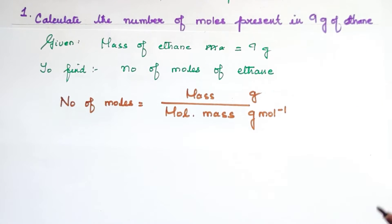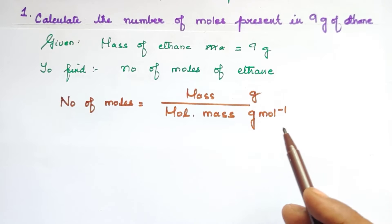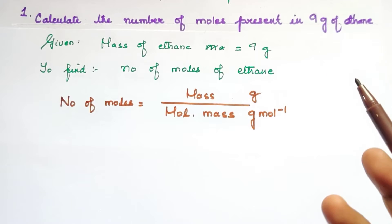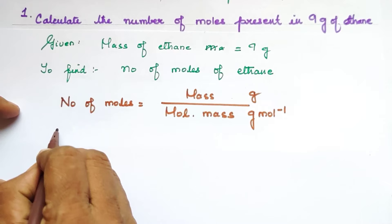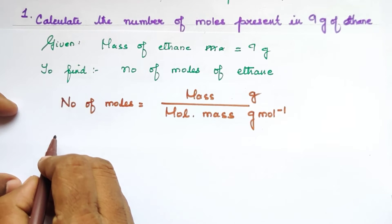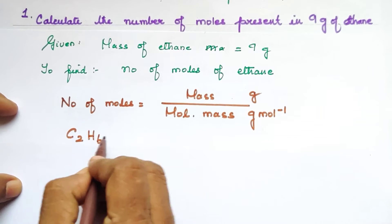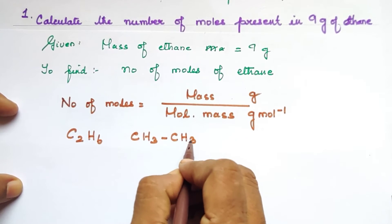The units are consistent, so we will substitute to find the answer. The mass is 9g. For the molar mass of ethane, it is not given in the question, so we have to calculate it. We need to know the molecular formula of the compound. The formula for ethane is C₂H₆ — that is 2 carbons and 6 hydrogens (CH₃CH₃).